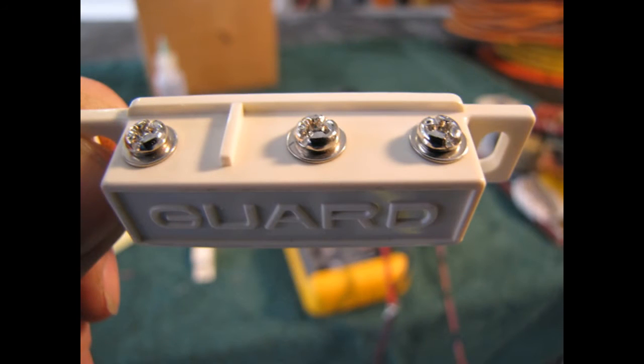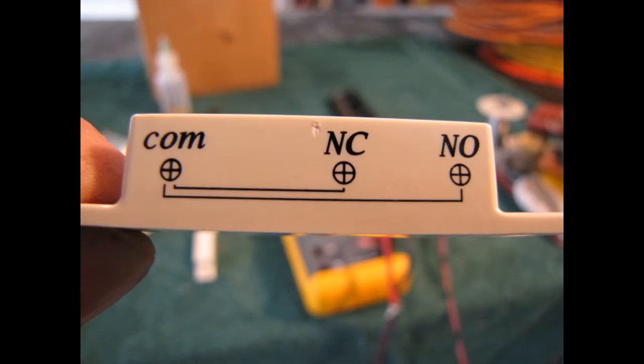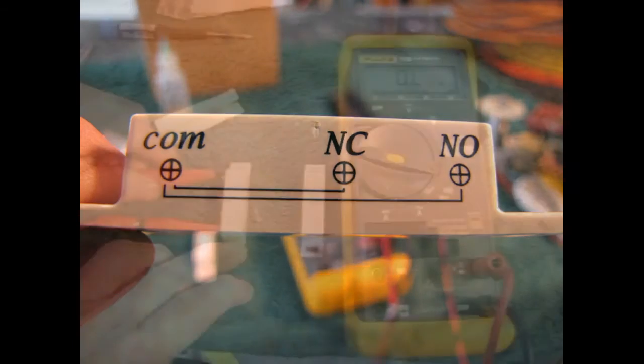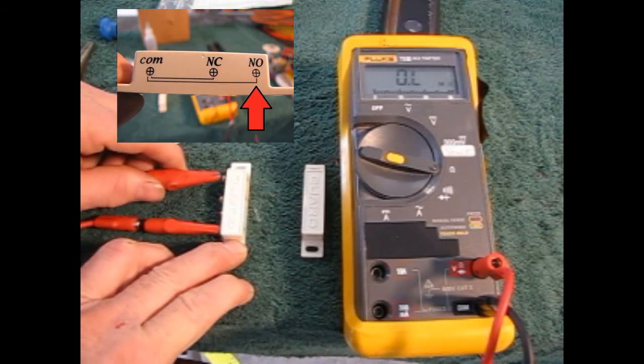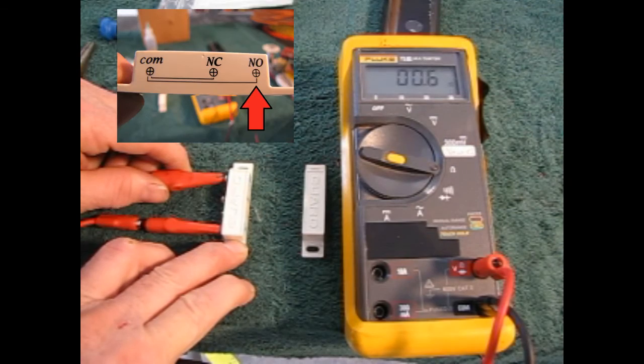There are three terminals on each switch. You have your common, which will always have a wire on it. It can be either normally closed or normally open. Now, the closed or open is in reference to when the other part of the switch, which is a magnet, is up close to it. Let me show you how it works.